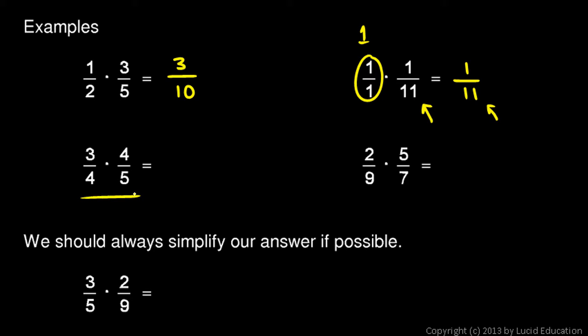Down here, 3 fourths times 4 fifths. I do 3 times 4 gives me 12. And 4 times 5 gives me 20. Now this one, you notice that these are both even numbers. So this fraction can be simplified. So since they're both even numbers, let's divide them both by 2. 12 divided by 2 is 6. And 20 divided by 2 is 10. And those are both even numbers again. So let's do that another time. 6 divided by 2 is 3. And 10 divided by 2 is 5. So 3 fifths is my answer in simplest form.